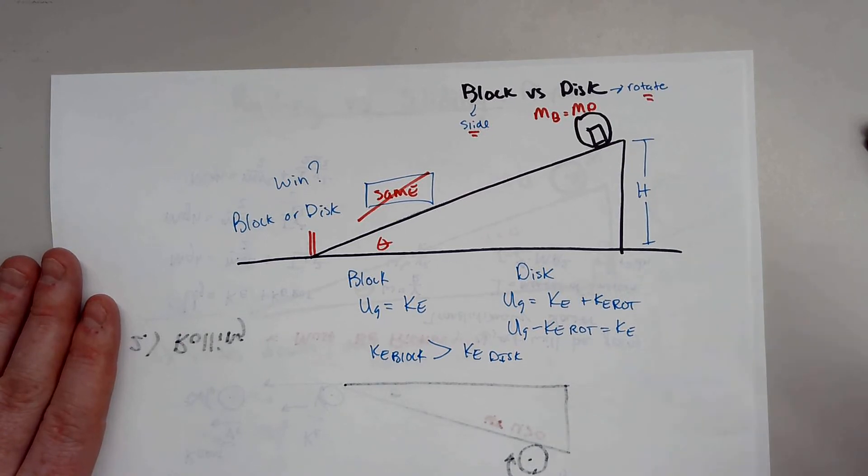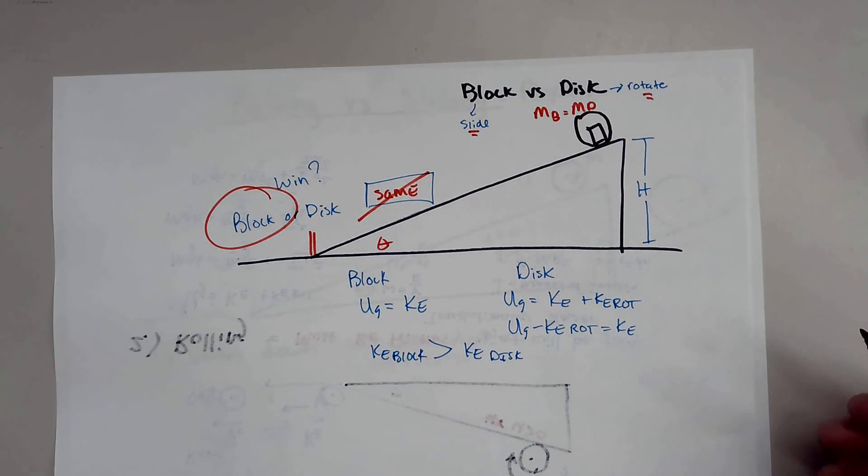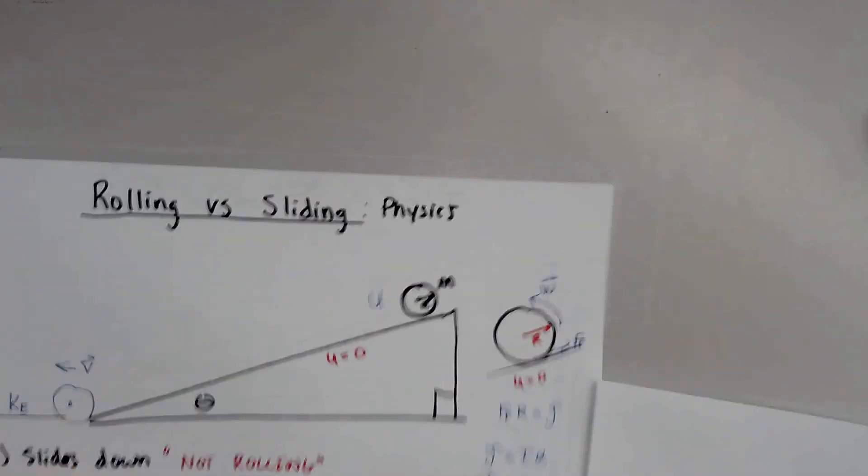So actually, who would win the race would actually be the block that's just sliding. So, again, this is a very typical problem, how they like to use this. And that's a really good example of what is the main difference between something sliding or rolling.